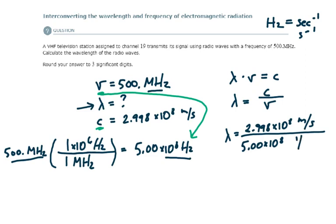It's 1 over seconds. Now notice my units here. If I divide meters per second by inverse seconds, then seconds cancels out and I'm left with meters. Let's ask ourselves, is that a unit of length? Absolutely. Wavelength is measured using units of length, so I know I've set it up perfectly.